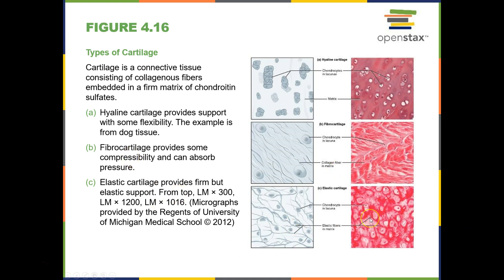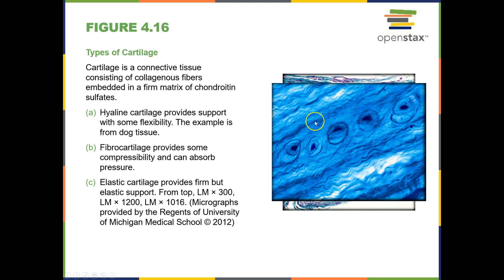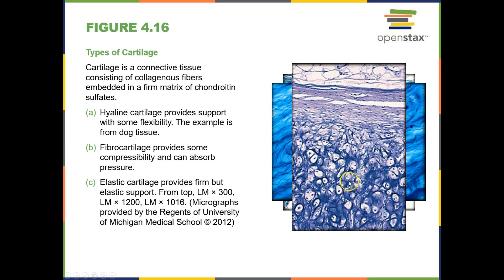Then we have elastic cartilage. Elastic cartilage contains elastic fibers as its main fiber and helps in maintaining the shape of structures. The main area where we see elastic cartilage is the outer region of our ear — that trumpet shape of our ear is elastic cartilage. Here you can see hyaline cartilage, fibrocartilage with those collagen fibers running along this line, and then elastic cartilage.